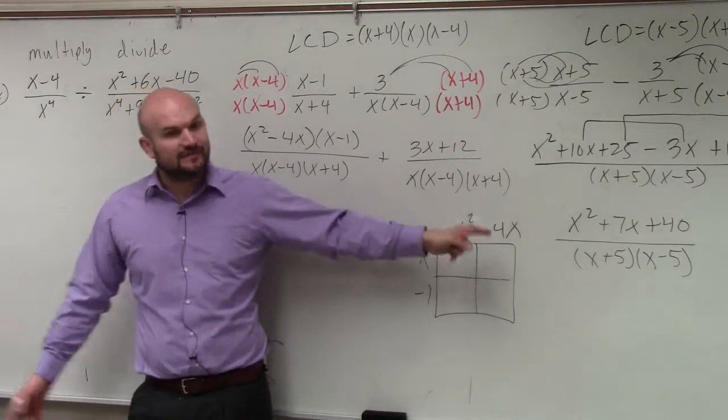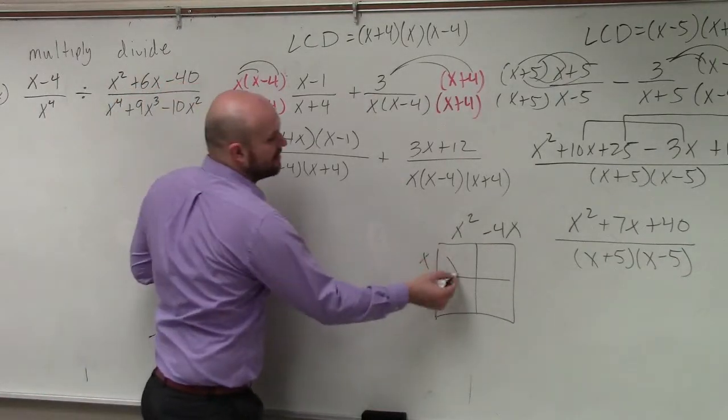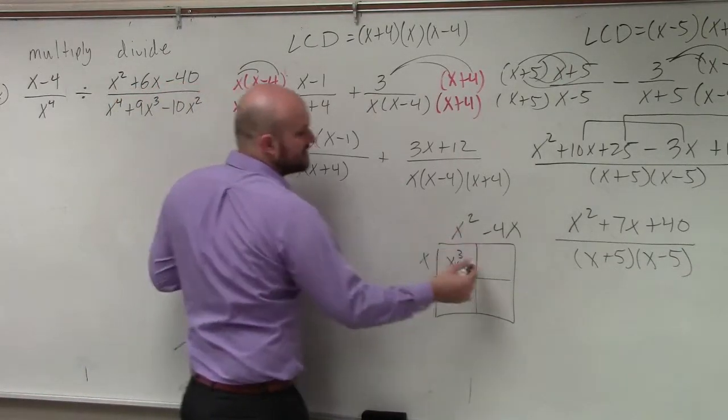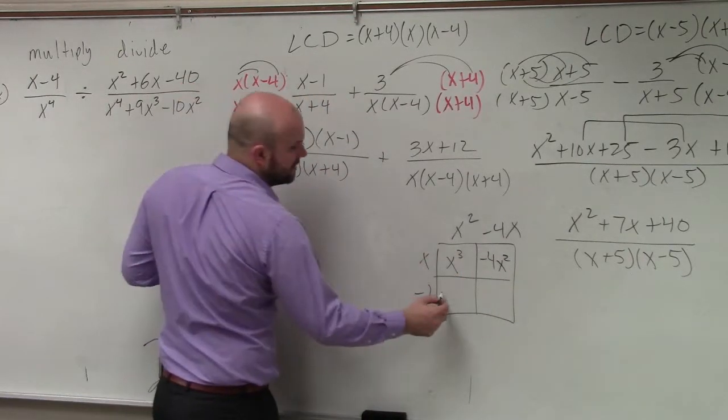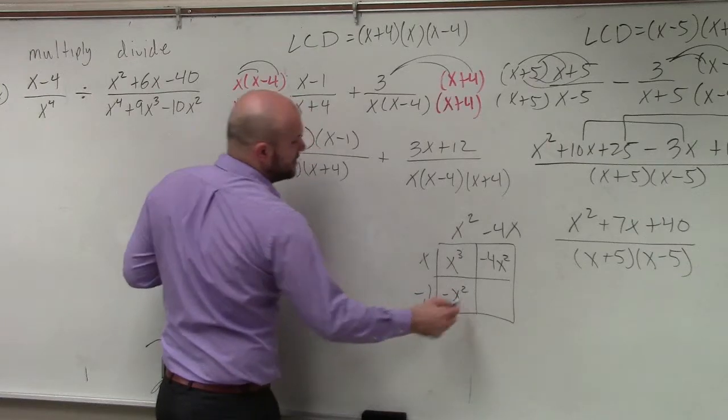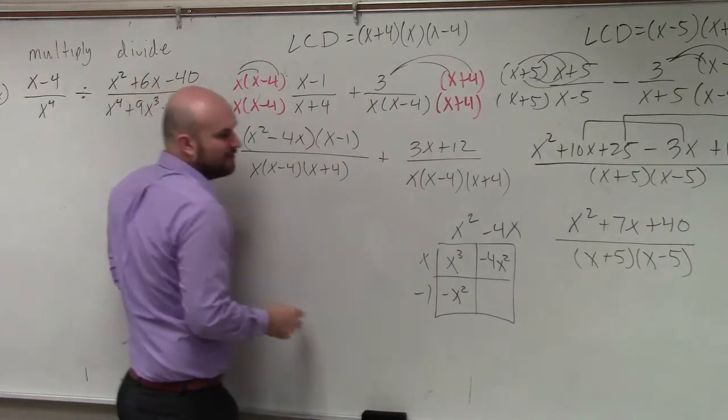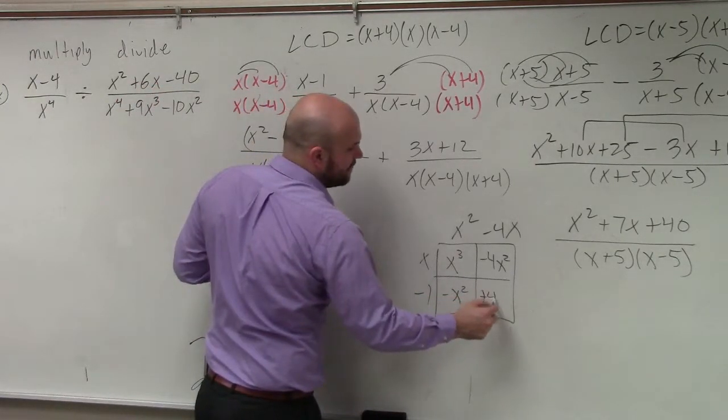Now you just find the area of each box. x times x squared is x cubed. x times negative 4x is negative 4x squared. x squared times negative 1 is negative x squared. And negative 1 times negative 4x is going to be a positive 4x.